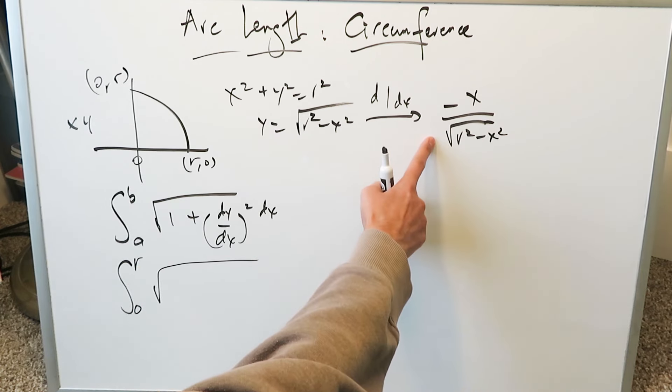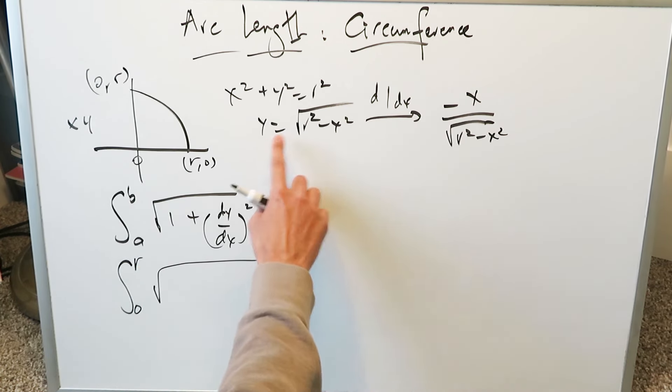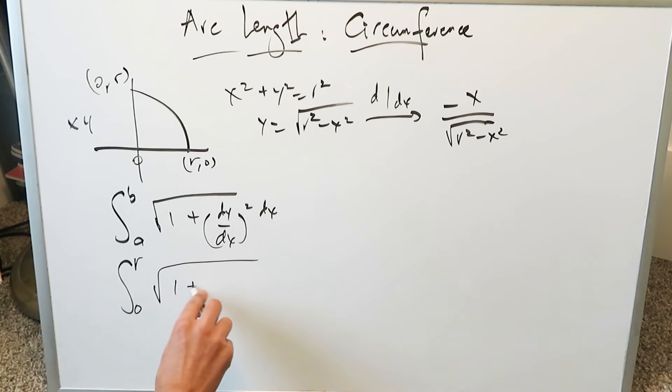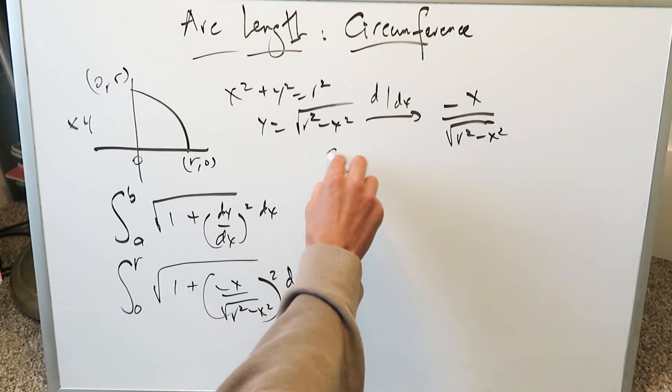And I have right here, this is equal to the derivative of y which is dy/dx. 1 + dy/dx, that component, that entire derivative factor squared dx. That's the formula coming into play.